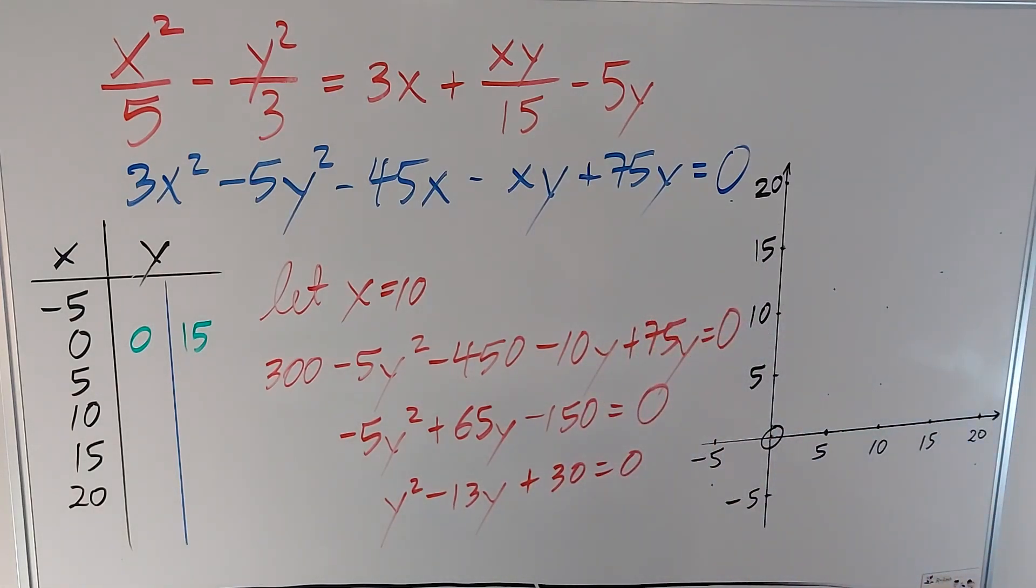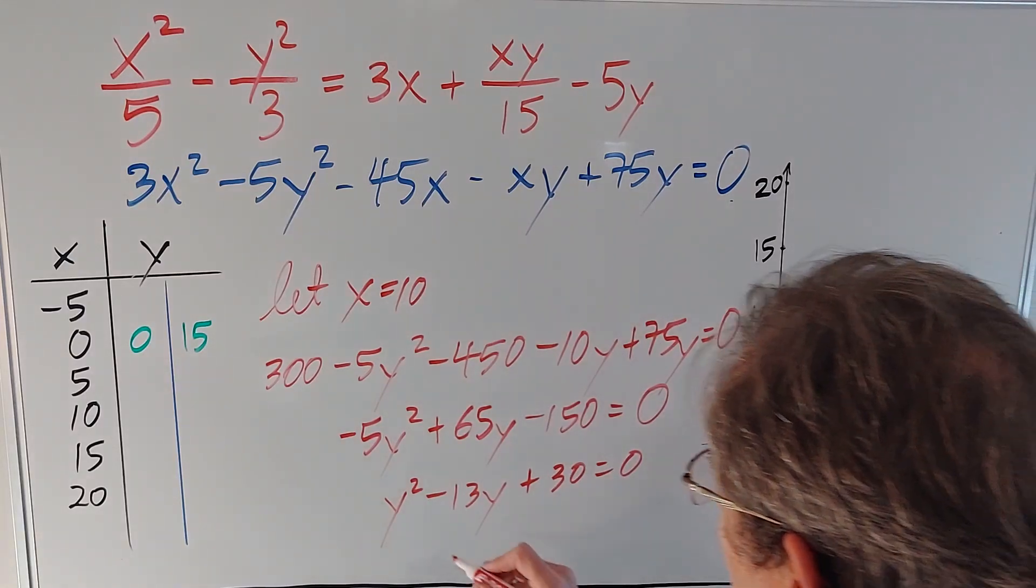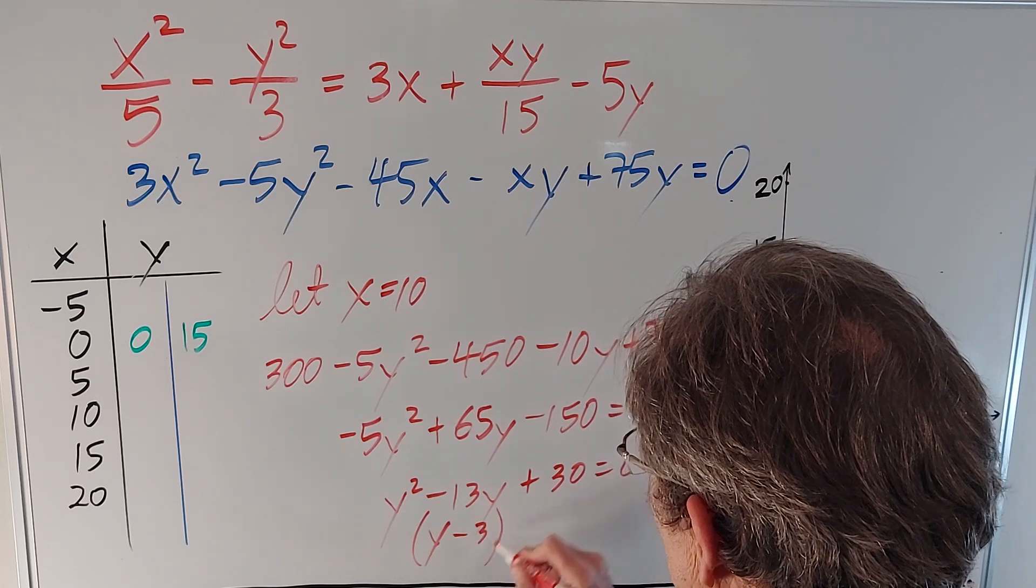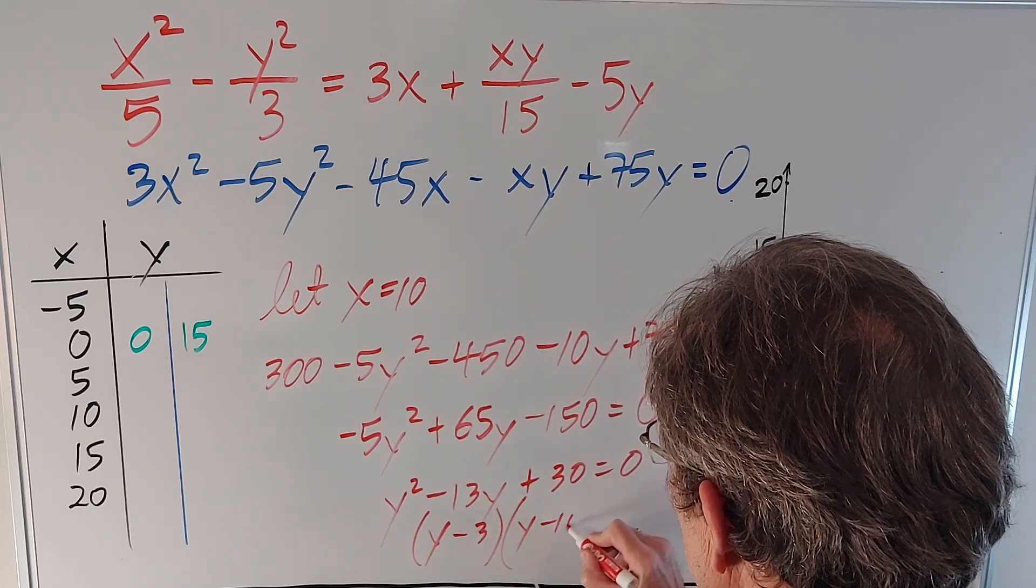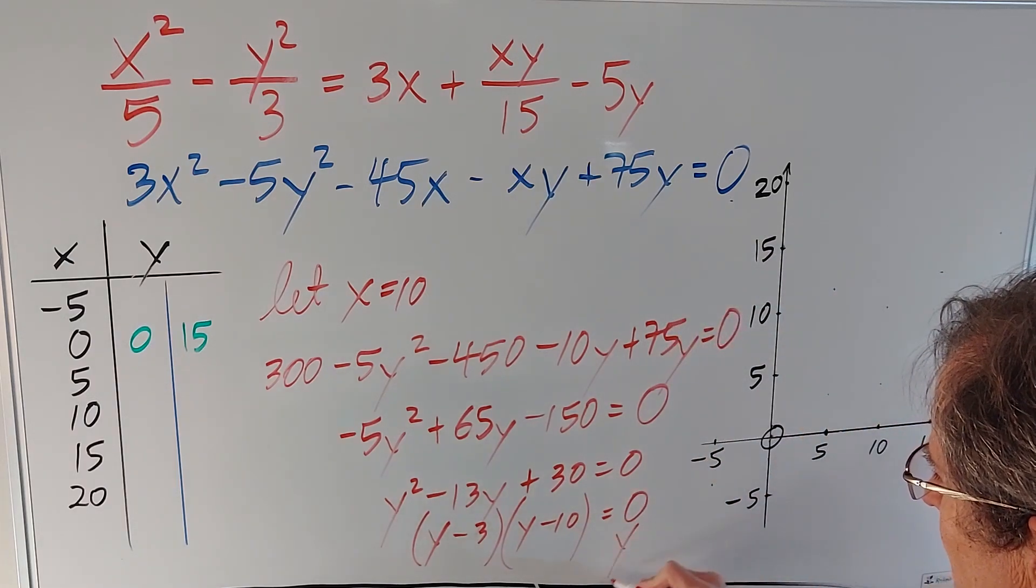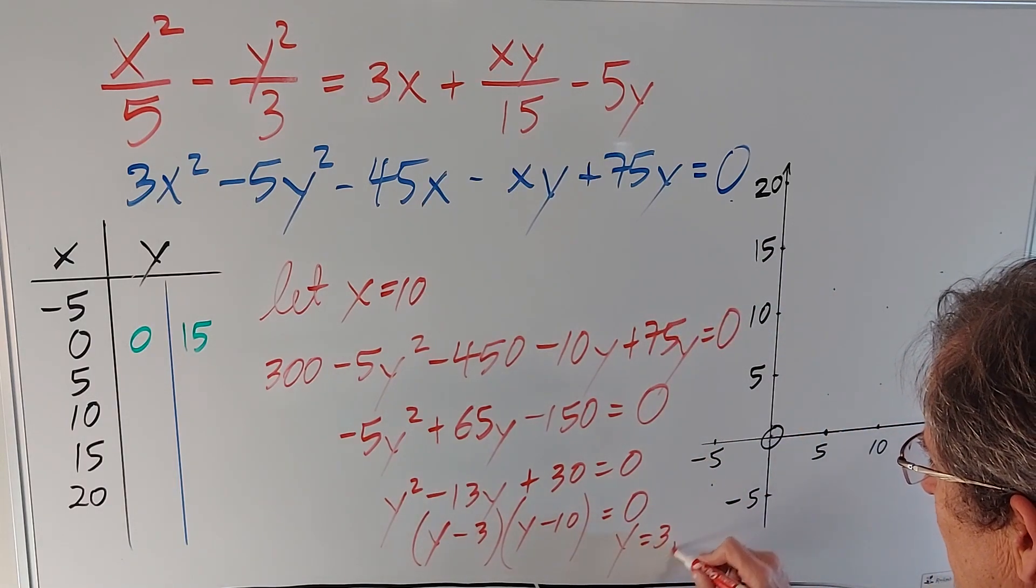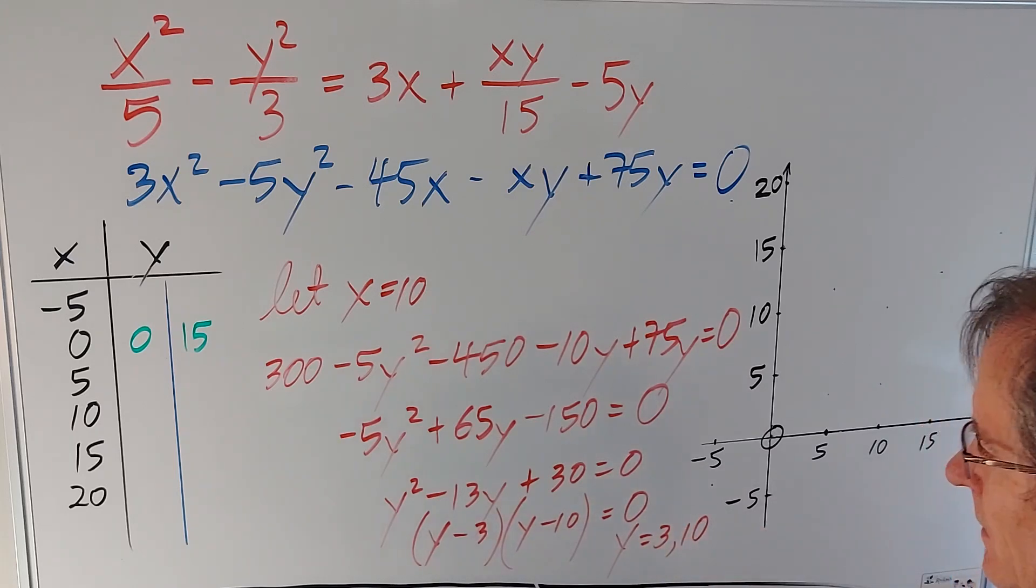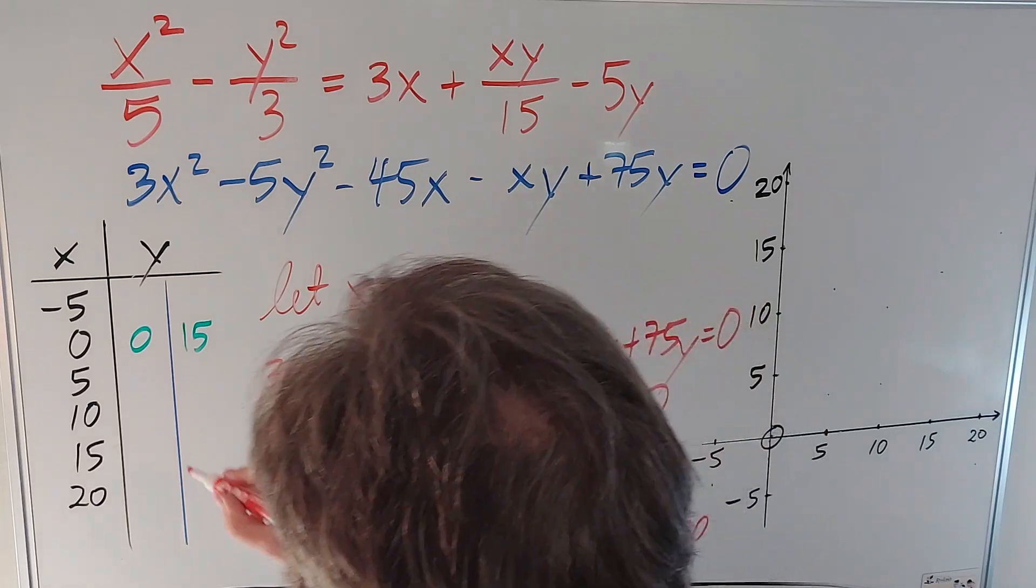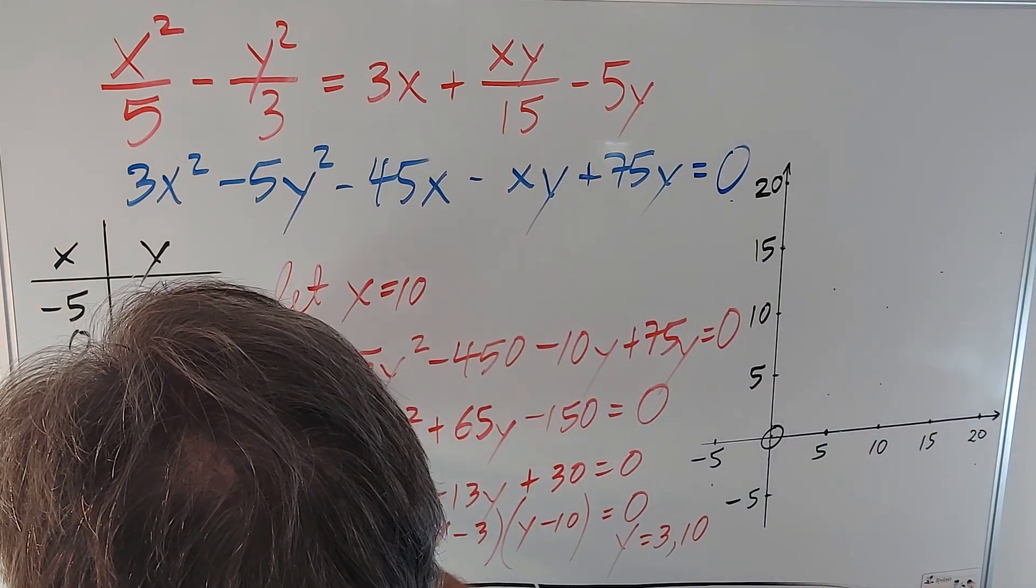So we get y² - 13y + 30 equals zero. Does that factor? Yes. As a matter of fact, it does. I get (y - 3)(y - 10) equals zero. So in this case, y is 3 or 10. Amazing how we didn't get decimals there. So let's put those in our table. 3 and 10.